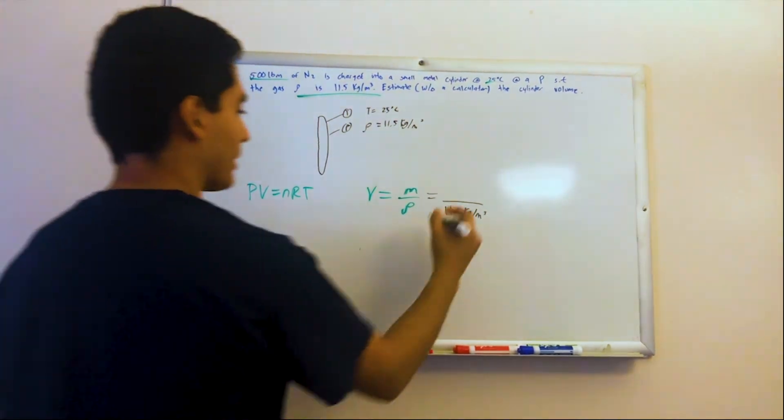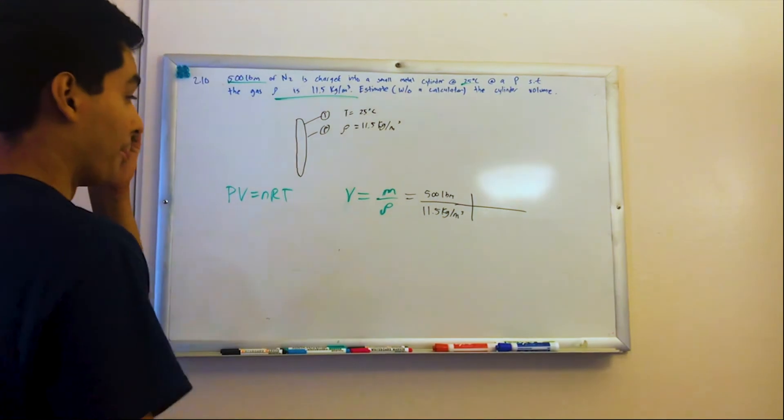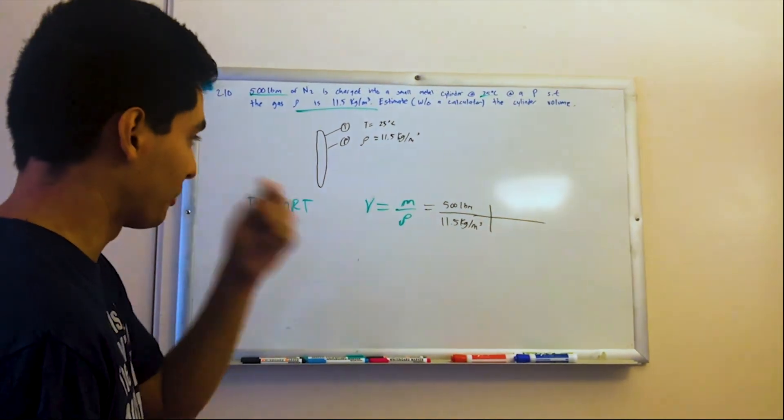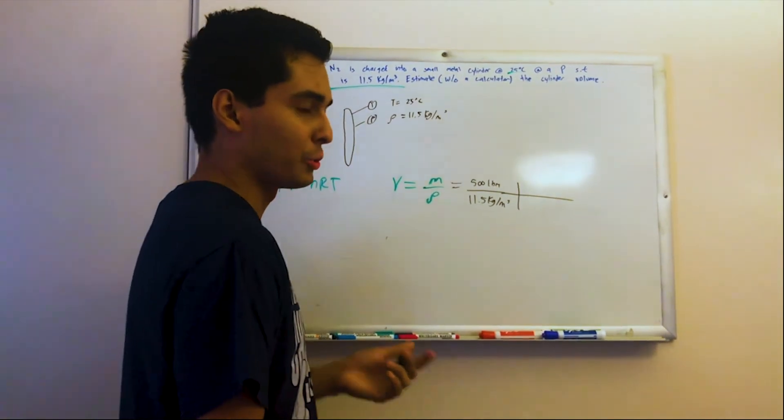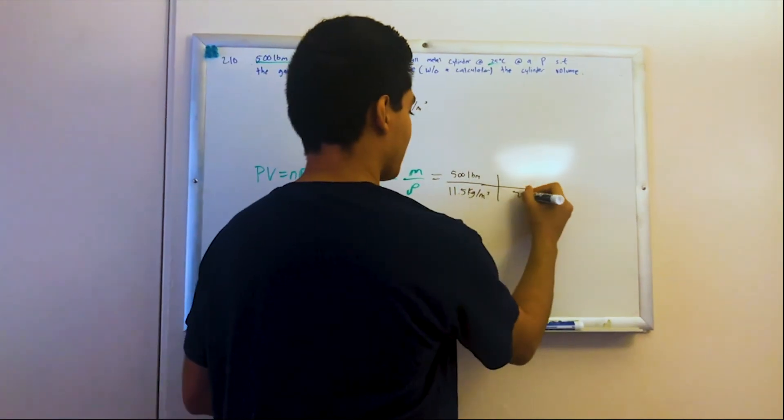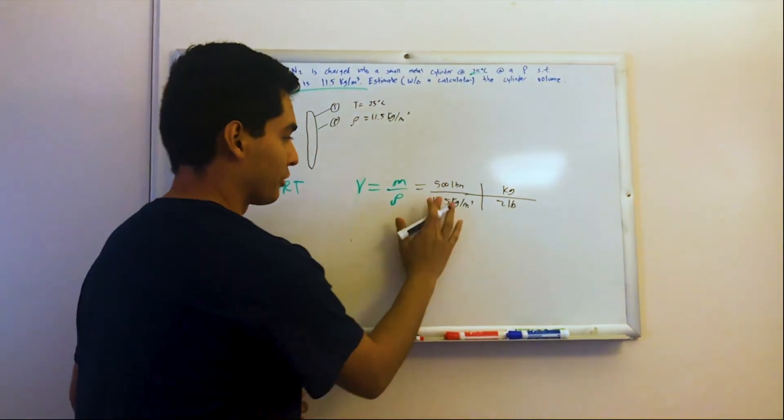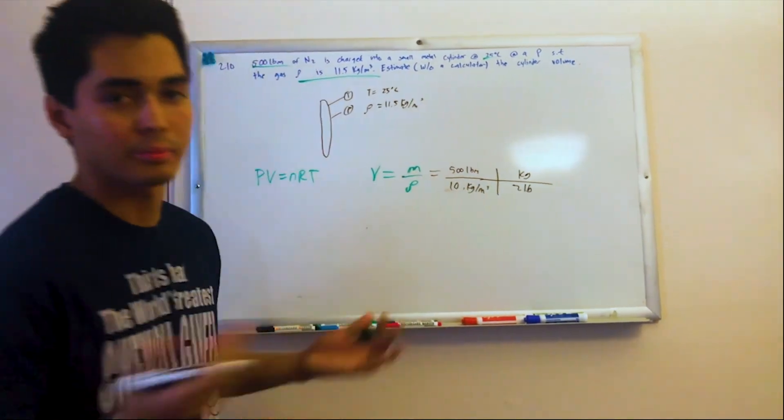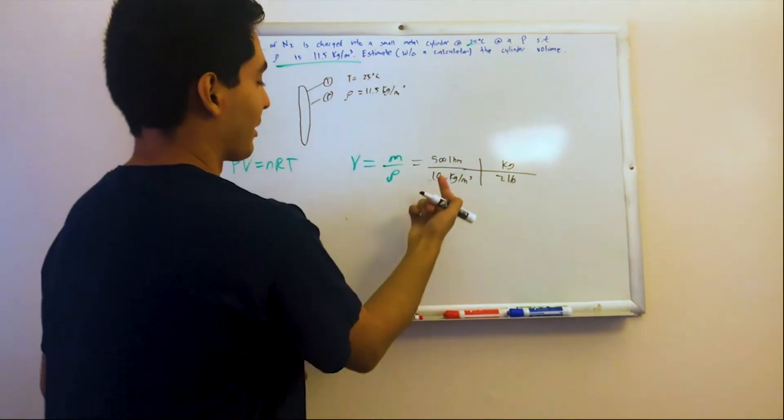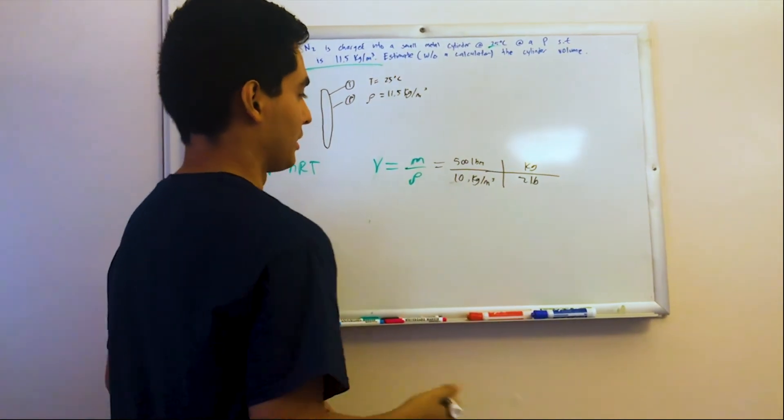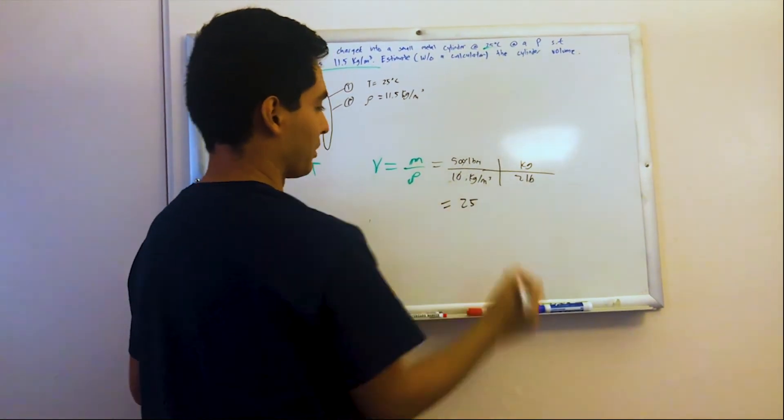And so we just need to convert pound mass to kilograms. I believe 2 pounds is a kilogram, right? But since we have to estimate without a calculator, why don't we just turn this into 10? 10 kilograms. 11.5 is approximately 10. So 500 divided by 2 divided by 10 is going to be, 50 divided by 2 is going to be approximately 25.